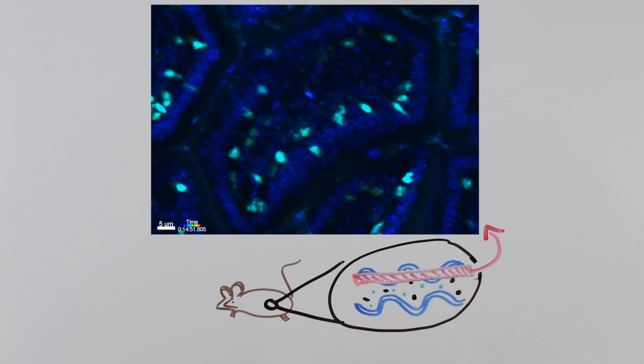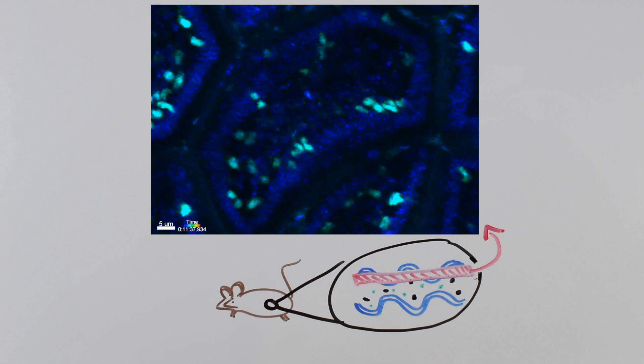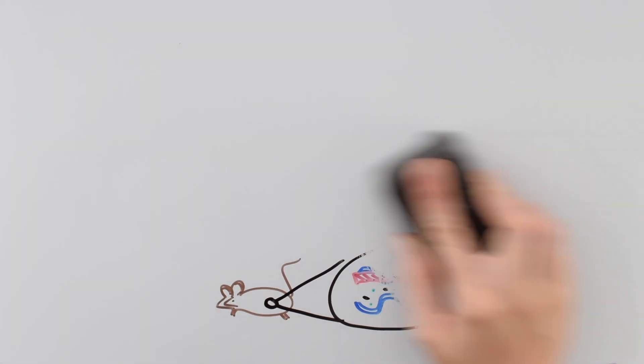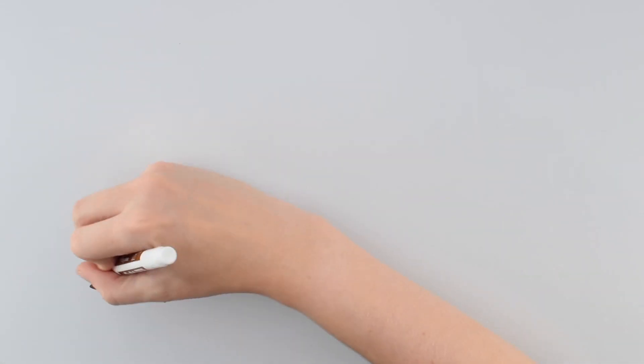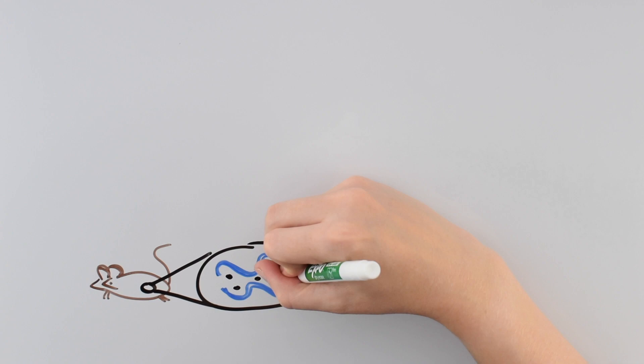But finding out that the IELs scan the intestinal wall wasn't enough. These researchers wanted to know what the IELs depend on for their scanning behavior. They first tested whether the IELs would still scan the wall if there was no bacteria in the gut.